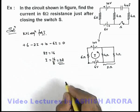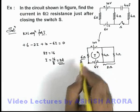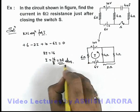So this is the current flowing in the circuit just after closing the switch. This is the current in the 6-ohm resistance, which is the answer to this problem.